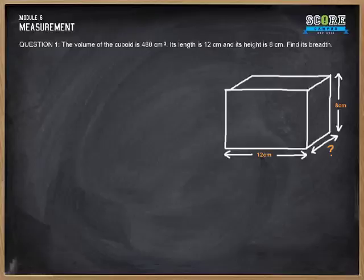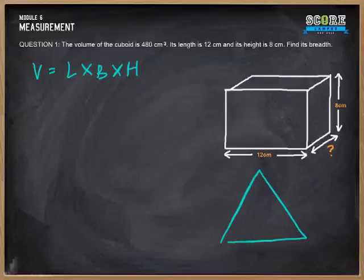Now, we know that volume V equals length times breadth times height, or L × B × H. We can actually reverse this formula to find the breadth. Or we can figure out a slightly more interesting way of remembering the formula. We've done something similar like this in speed.